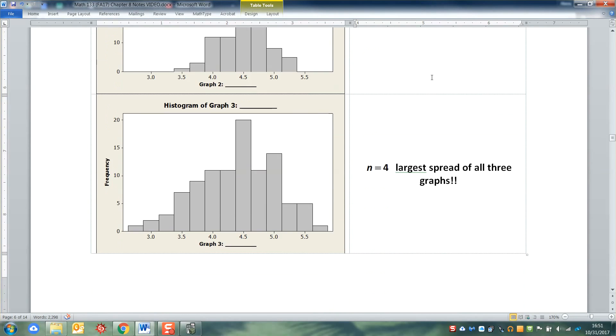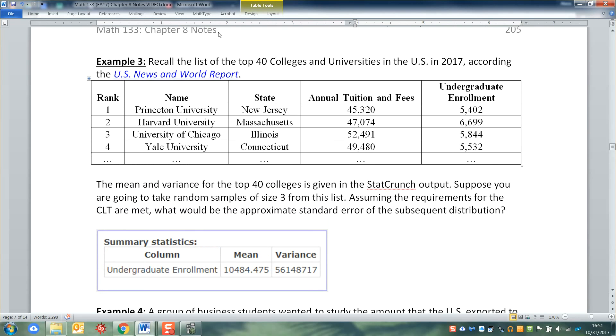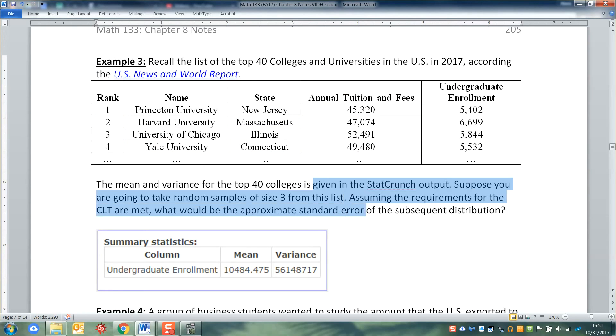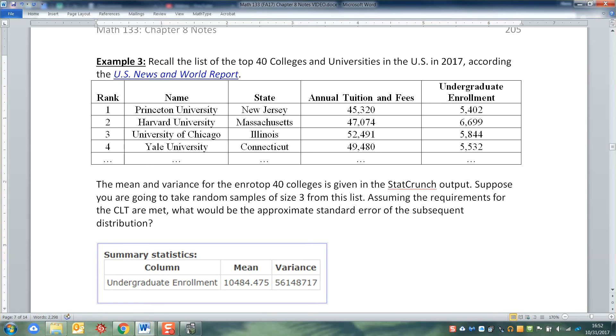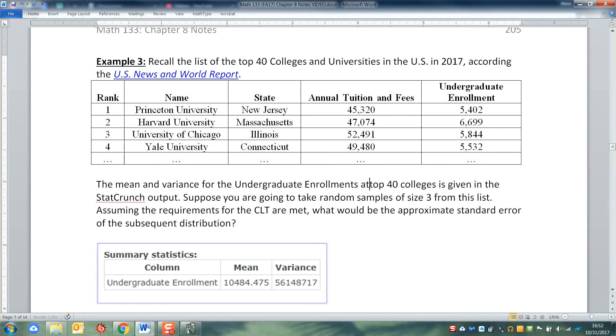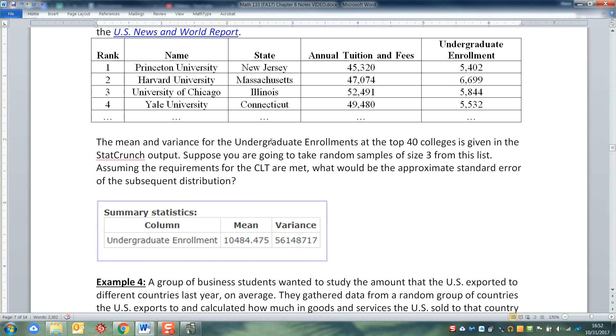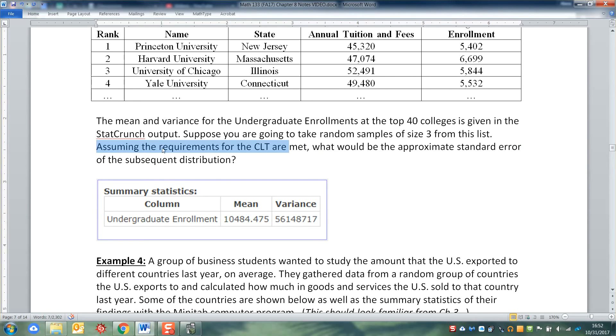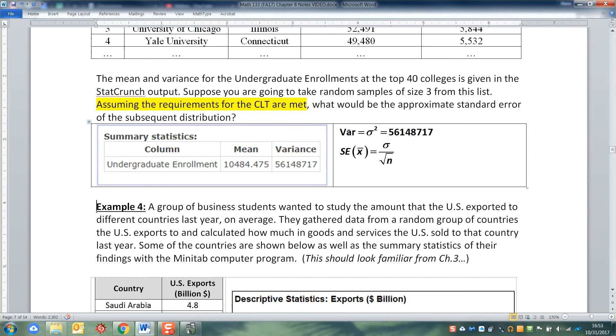Now let's take that standard error formula and let's apply it in two different ways down here. So we look here, we have the top 40 colleges and universities in the US in 2017. I've only listed the first four. There's a whole bunch more. And we're going to look at the mean and variance for the undergraduate enrollments of the top 40 colleges is given in the StatCrunch output. Suppose you're going to take a random sample of size three from this list, assuming the requirements - oh, there's a big one. Assuming the requirements for the Central Limit Theorem are met. CLT, Central Limit Theorem. That's the way we abbreviate it a lot of the time. So that means we don't have to show all those conditions and all that stuff. We just assume it's met. What would be the approximate standard error of the subsequent distribution?